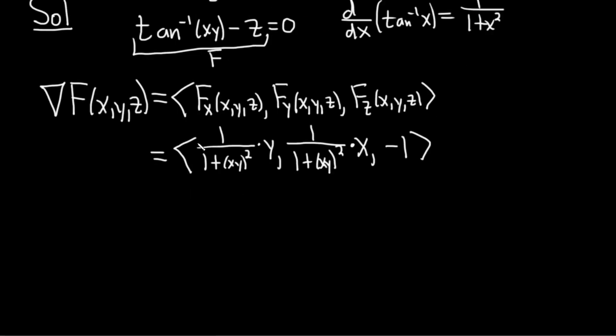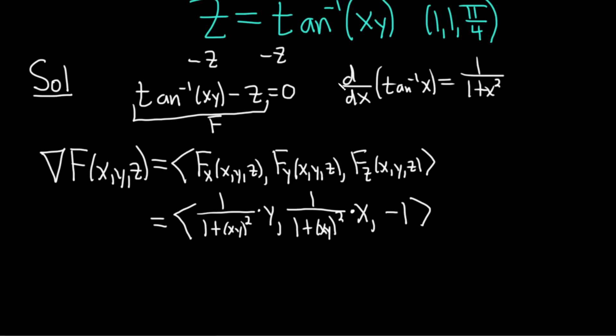Now we just plug in the numbers. These are our points that we're going to be using. This is our x1, y1, and z1 in our plane equation. We're going to plug them in here for the gradient as well. So we have the gradient at (1, 1, π/4).